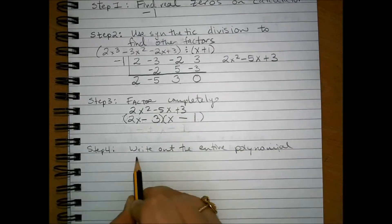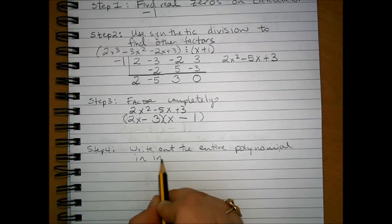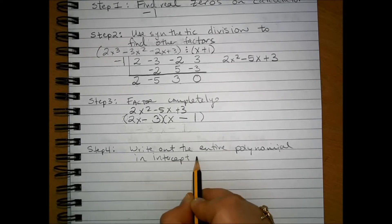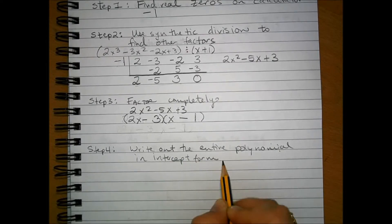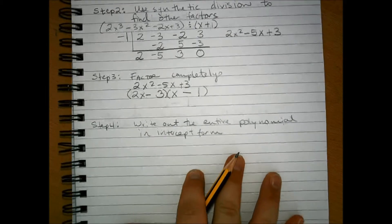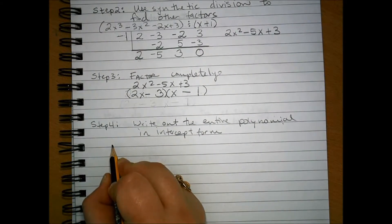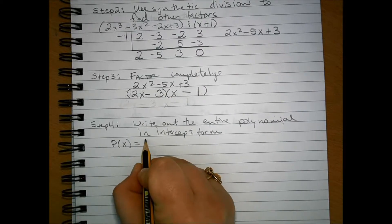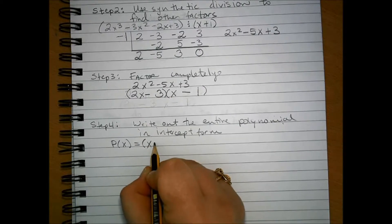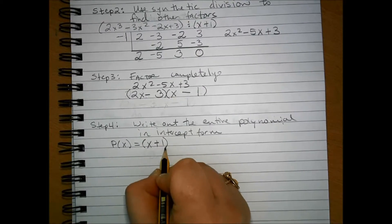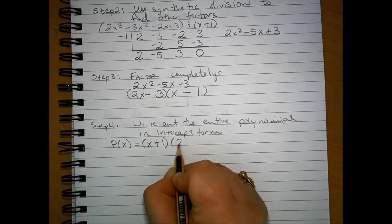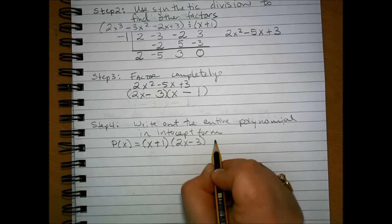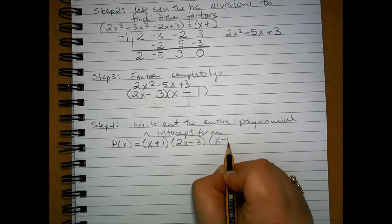And we want to write out the entire polynomial in intercept form. That means that we can write out the polynomial, which we're going to call p of x, and that's going to be equal to our factor that we get from our zero that we found on the calculator plus the factors that we found with synthetic division and then continuing to factor.